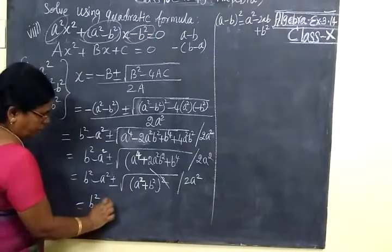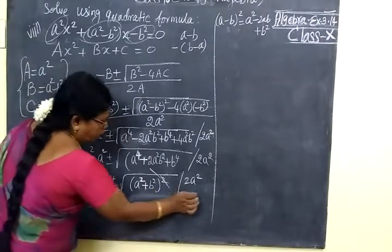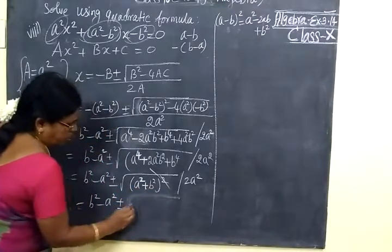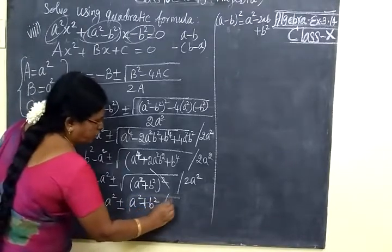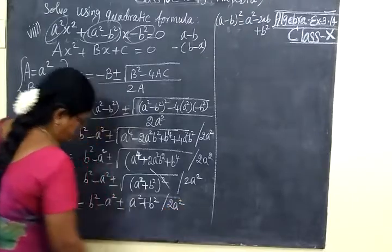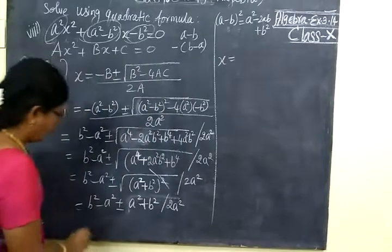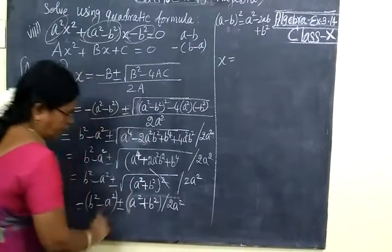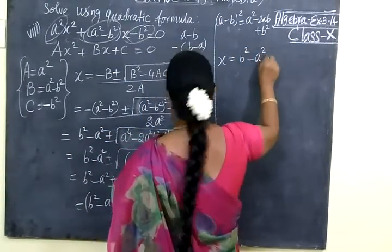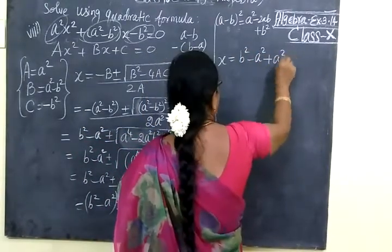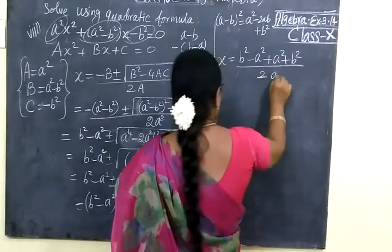So we write: B² - A², plus or minus (A² + B²), the whole divided by 2A². Taking the plus sign: (B² - A²) + (A² + B²) all by 2A². Taking the minus sign: (B² - A²) - (A² + B²) all by 2A².